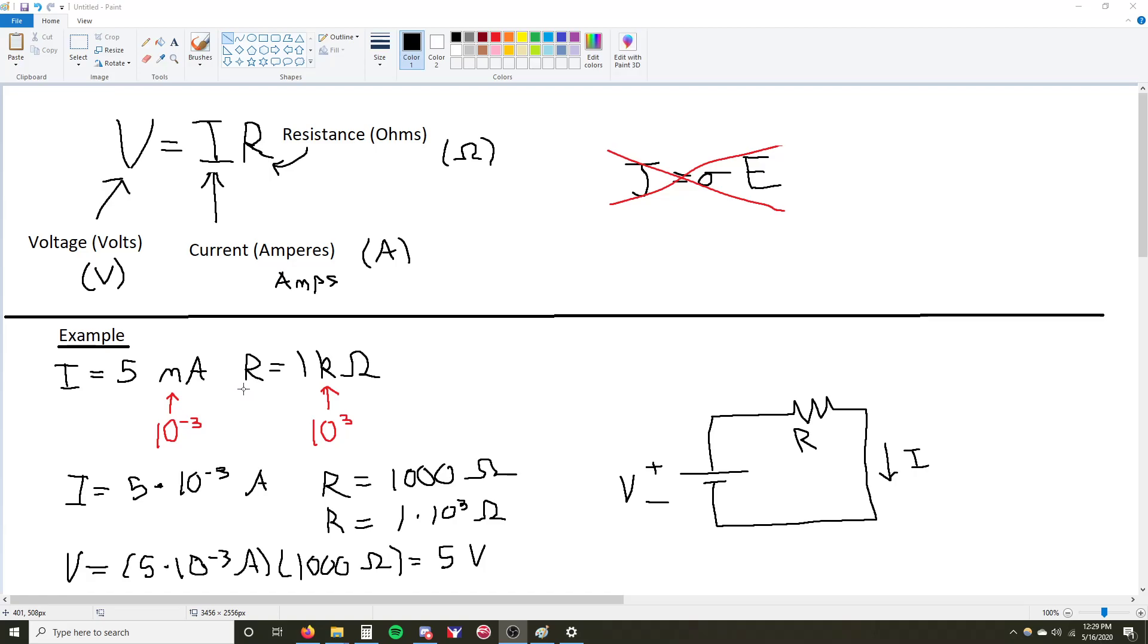What you want to do is make sure that your givens do not have any modifiers on them for the units. Because if you were given milliamps and milli-ohms, your answer would be in microvolts. And your homework assignment might want your answer to just be in volts.